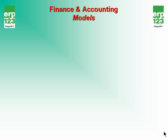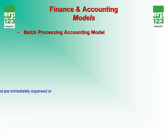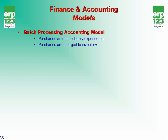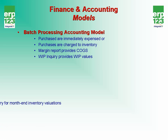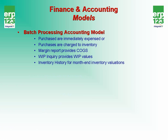ERP123 supports a wide variety of accounting processes, but there are some general ones covered in these overviews. The first is a batch processing accounting model. In this case, purchases are typically expensed immediately or are charged to inventory. The system then uses the margin report to give you your cost of goods sold for the period. A work in process inquiry module provides WIP values on a real-time basis, so this report needs to be taken at month end. You then have the inventory history system for month-end inventory valuations. All of these history systems are based on running your period end history update module. You'll then use journal entries to adjust your inventory cost of sales and work in process valuations. This is a typical batch processing model.